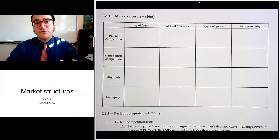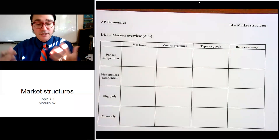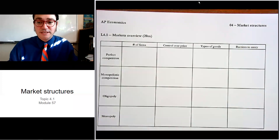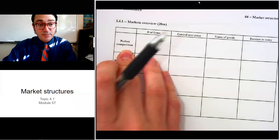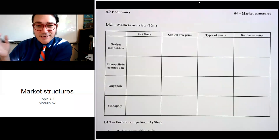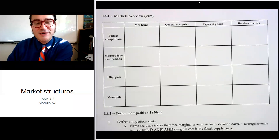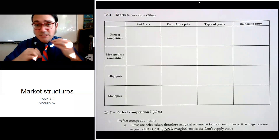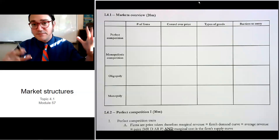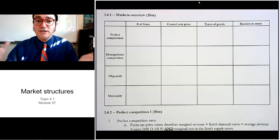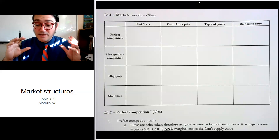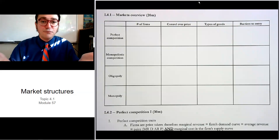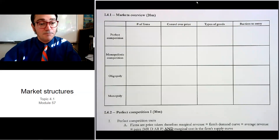Hi there. This is the very first lecture of Unit 4, which is about market structures. In this lecture, we're going to give you the big picture overview of all four different kinds of markets that actually exist. The first one is perfect competition — this is the model we've been operating under since the start of the semester, with all those assumptions about many buyers and sellers, perfect information, and all of those things. Let's get started.